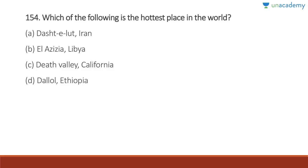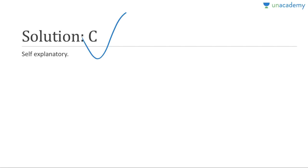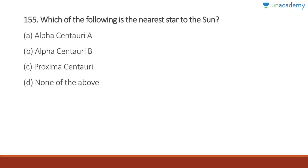Question 154: Which is the hottest place in the world? Many people think Al-Azizia with 58 degrees Celsius, but this was considered wrong. Since 2012, Death Valley in California at approximately 56.7 degrees Celsius is considered the hottest place in the world. Answer is C.